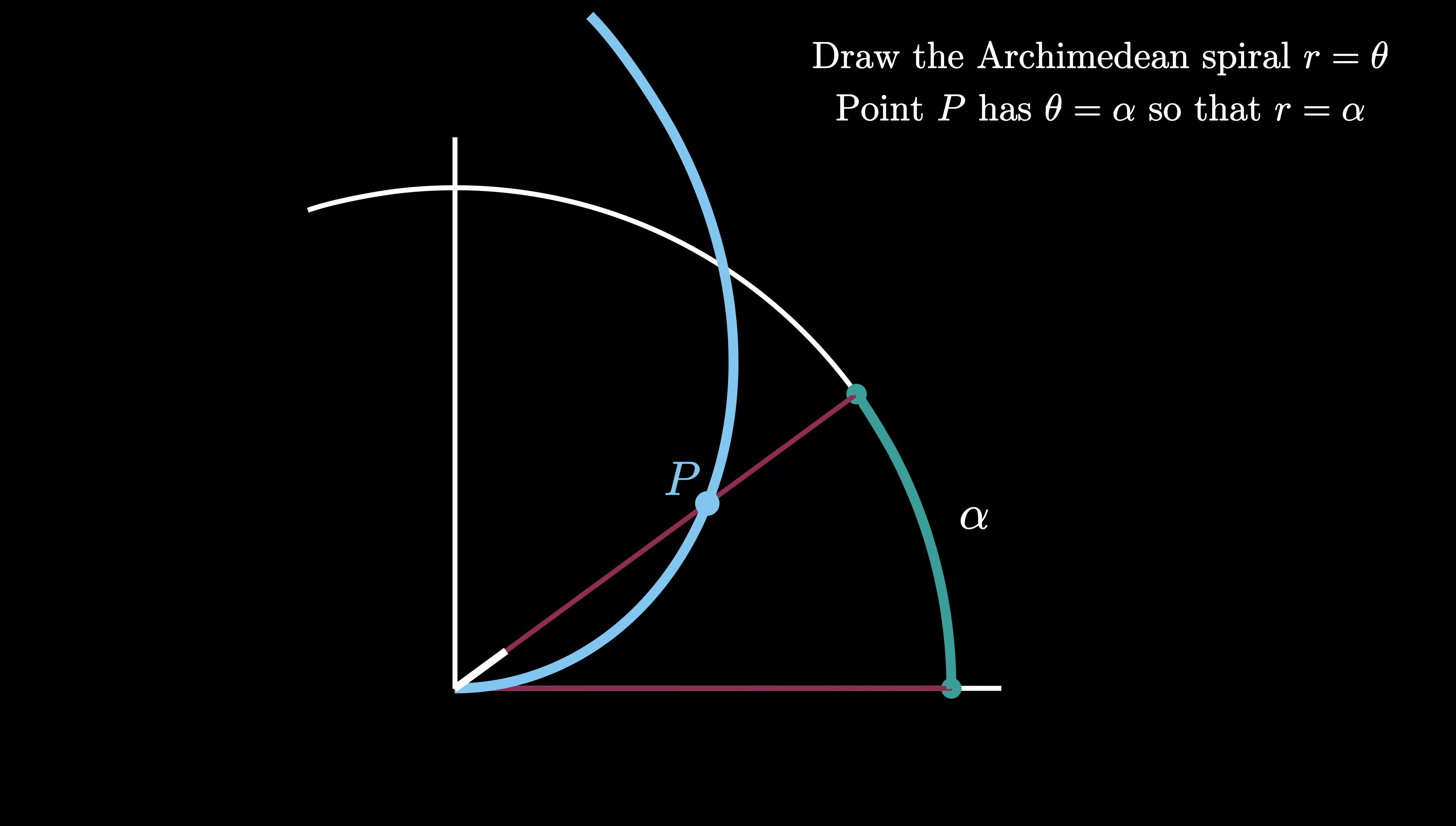We can then use our straight edge and compass to divide the line from the origin to the point P into three equal pieces like this. We use our compass to create this arc of radius alpha over 3. It intersects the Archimedean spiral at a point Q, and because Q has a radius of alpha over 3 its angle must be alpha over 3.